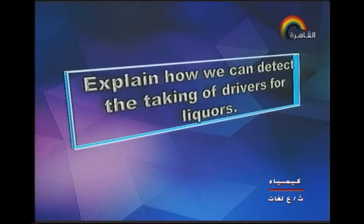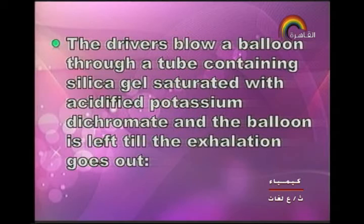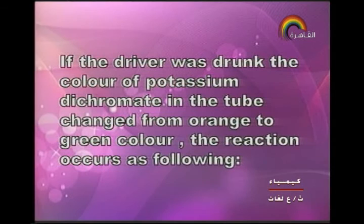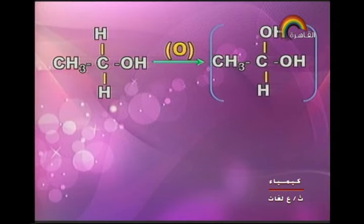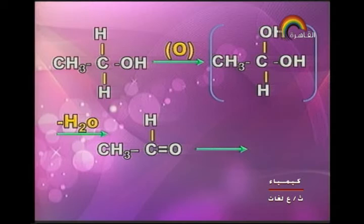Next type of question: explain how we can detect alcohol intake by drivers. The driver blows a balloon through a tube containing silica gel saturated with acidified potassium dichromate. If the driver was drunk, the color of potassium dichromate changes from orange to green. The reaction: ethanol is oxidized to an unstable compound which loses water to give acetaldehyde, then further oxidized by the acidic medium to give acetic acid.